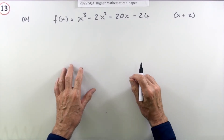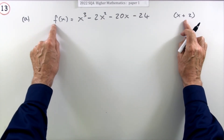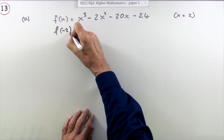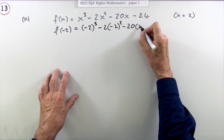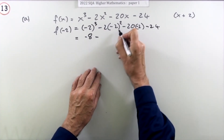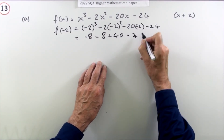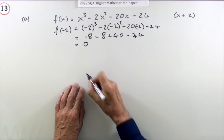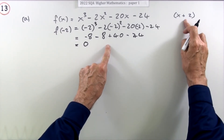The third method is to use the factor theorem directly: x plus 2 is a factor if f(negative 2) = 0. Substituting: (−2)³ − 2(−2)² − 20(−2) − 24 = −8 − 8 + 40 − 24 = 0. Since f(negative 2) = 0, by the factor theorem x plus 2 is a factor.